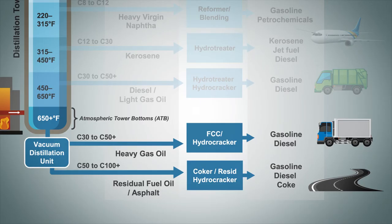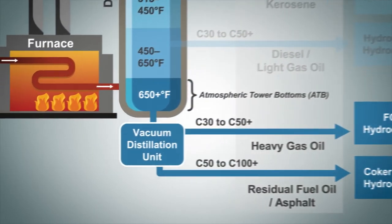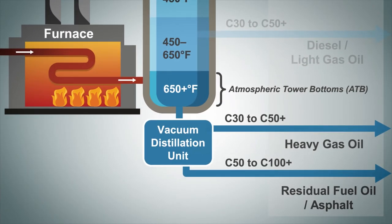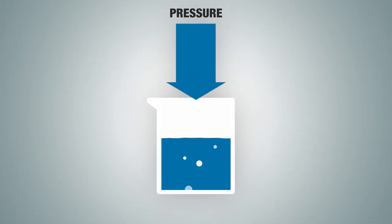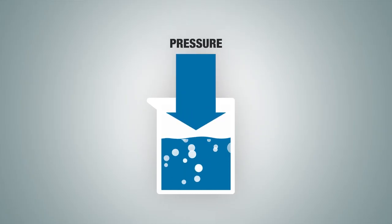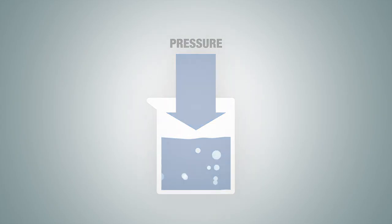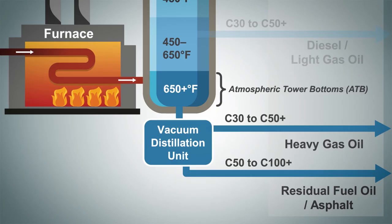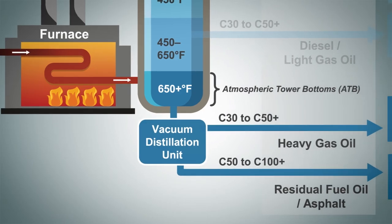The atmospheric tower bottoms are generally sent to a vacuum distillation unit, which operates below atmospheric pressure, meaning if you have an open valve on a vacuum distillation unit, it will actually suck the air in. We utilize a vacuum distillation unit because liquids will boil at lower temperatures when exposed to lower pressure environments. Instead of working with very high temperatures of around 1,000 degrees Fahrenheit, the reduced pressure allows you to lower the temperature required to separate the fractions in the atmospheric bottom stream.